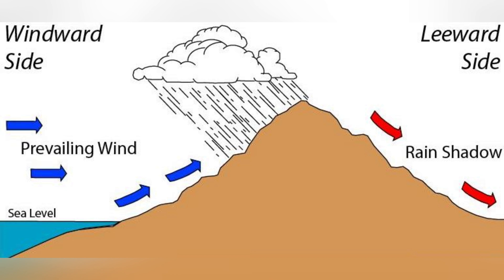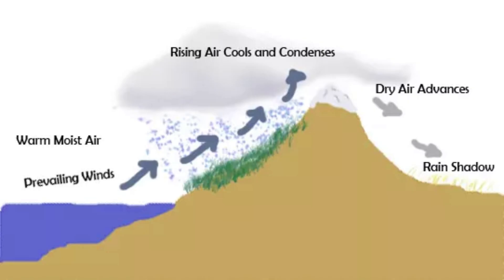Next are the rain shadow deserts, which develop due to mountains blocking moisture-bearing winds. As moist air approaches the mountain range, it rises, cools, and releases its moisture on the windward side in the form of rain. By the time the air reaches the leeward side, it has lost most of its moisture, and as it descends, it warms up.